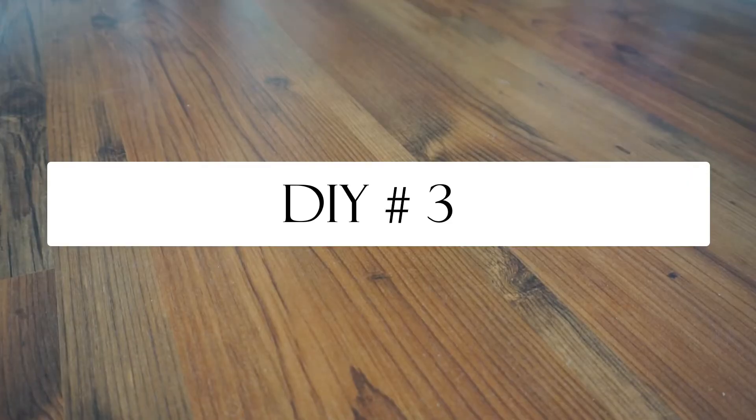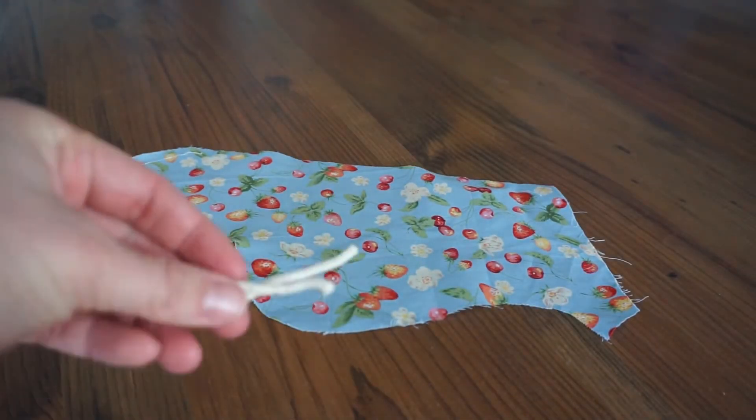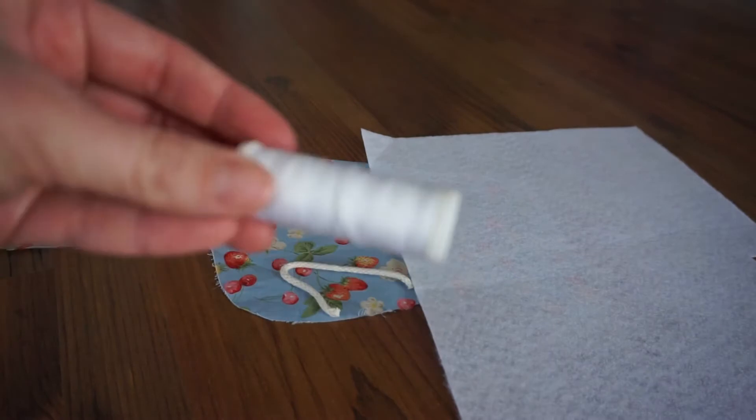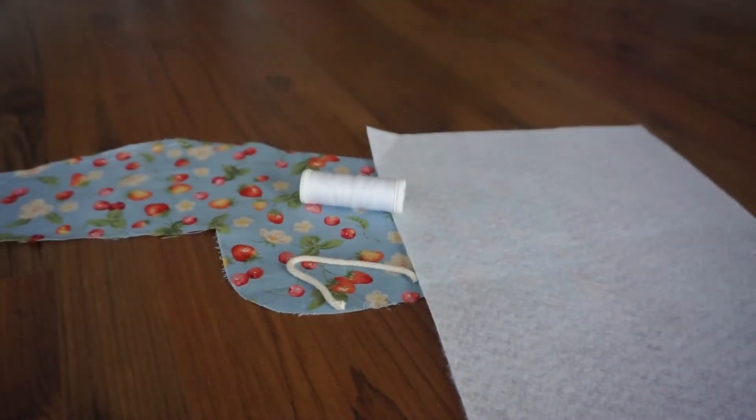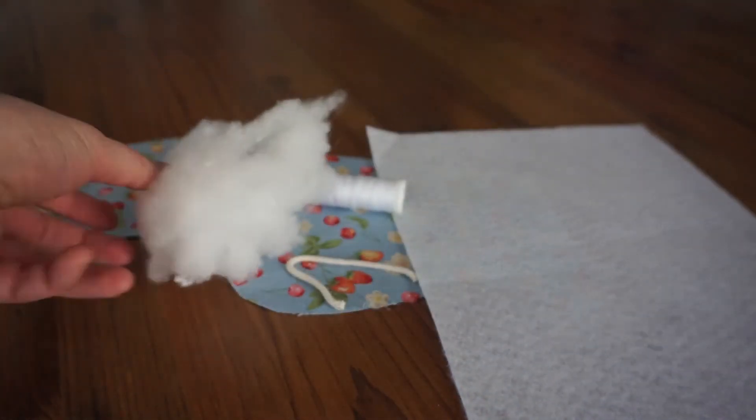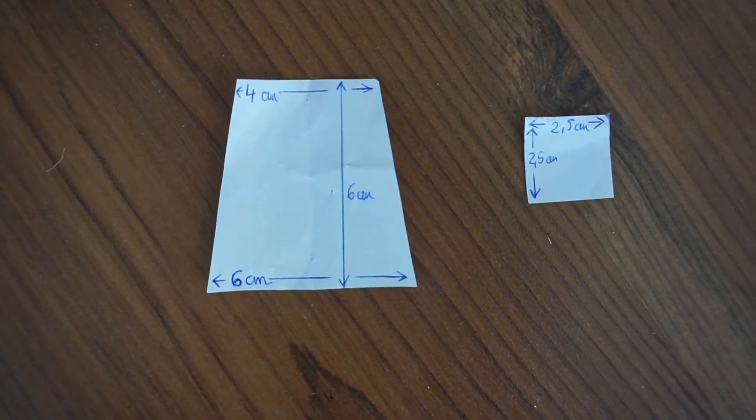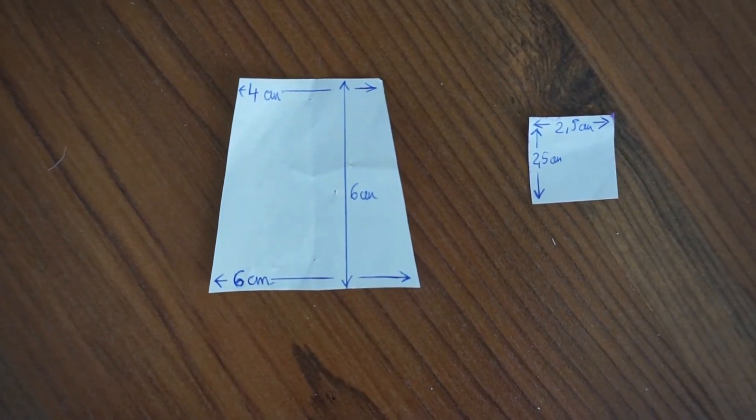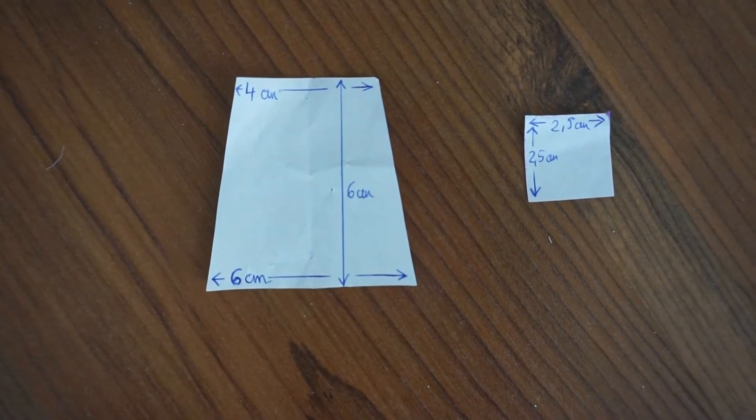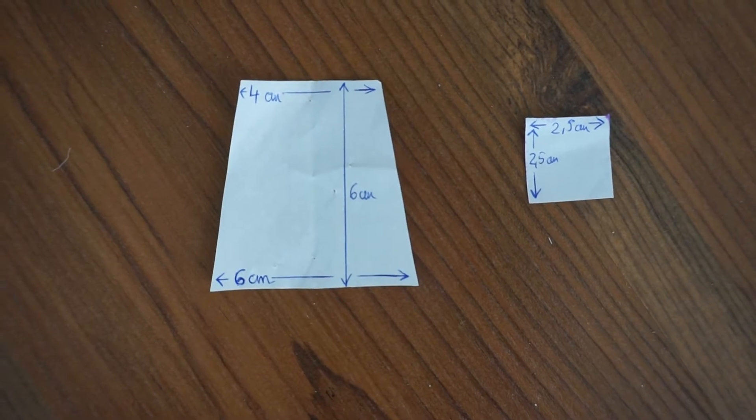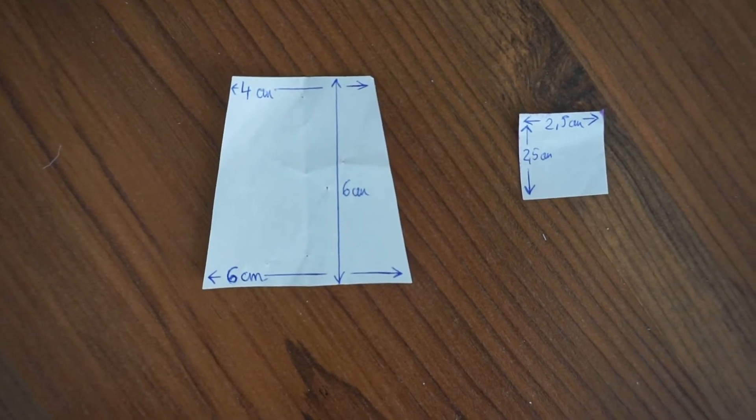Als nächstes wollte ich gerne Teebeutel für die Spielküche nähen. Ihr braucht dazu einen kleinen Stoffrest, eine Kordel mit ca. 10 cm Länge, einmal weißen Filz, ein bisschen Füllwatte oder ähnliches und passendes Nähgarn. Das Schnittmuster habe ich mir auf Papier aufgezeichnet. Ihr braucht einmal ein Trapez mit einer Höhe von 6 cm, die untere Kante ist 6 cm und die obere Kante ist 4 cm. Dann braucht ihr noch ein Quadrat mit einer Kantenlänge von 2,5 cm.